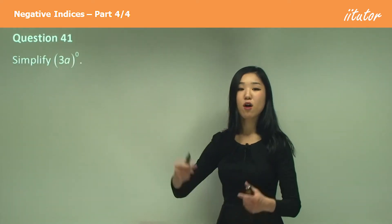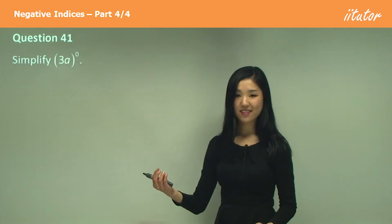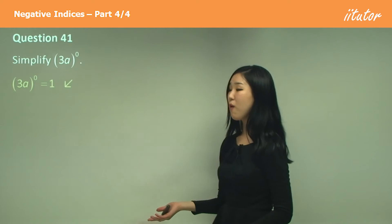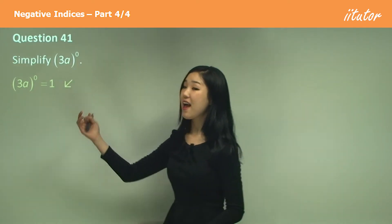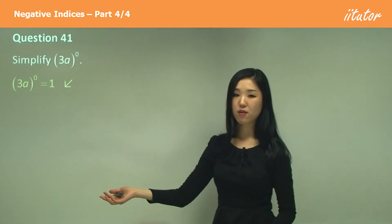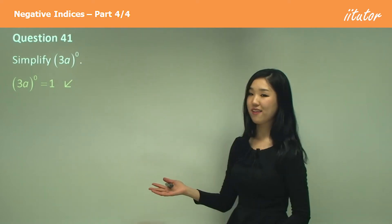Three a — the whole thing to the power of zero — what's that? It's going to be one. Because we're raising this whole thing to the power of zero, and anything to the power of zero is one. So the answer is one.